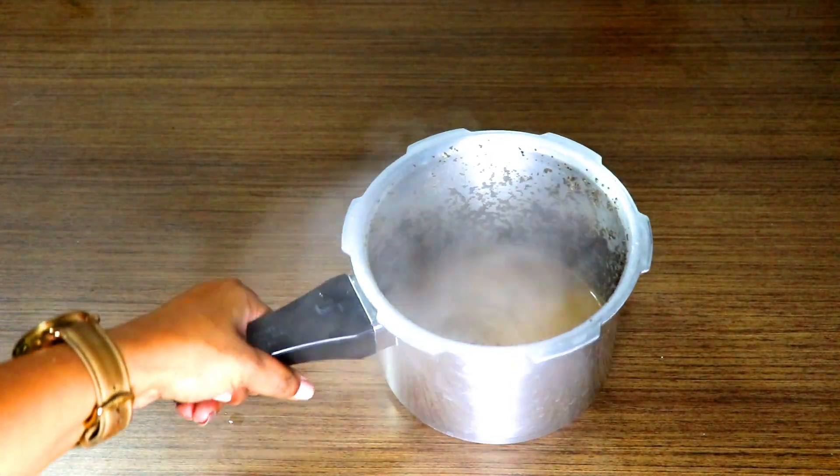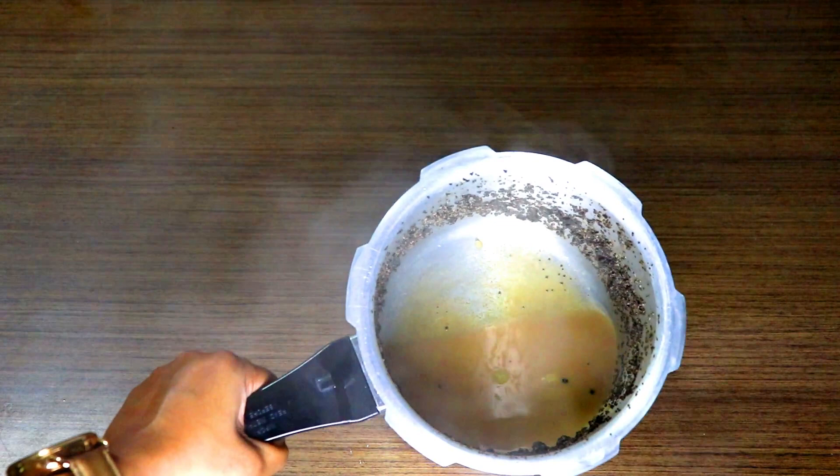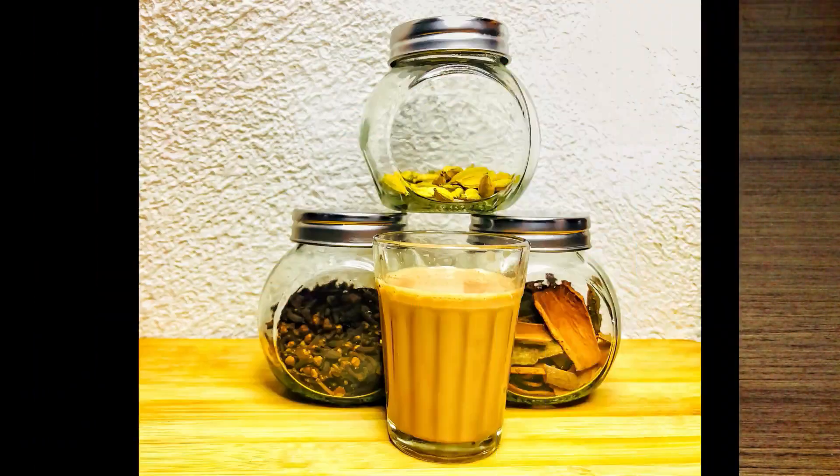This is how it looks upon opening the pressure cooker after manually releasing the pressure. Strain the tea and serve hot with biscuits or pakodas.